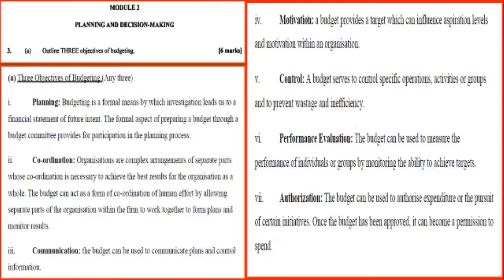The first part of the question asks to outline three objectives of budgeting. I have listed seven on your screen. First: planning. Budgeting is a formal means by which investigation leads us to a financial statement of future intent. The formal aspect of preparing a budget through a budget committee provides for participation in the planning process.